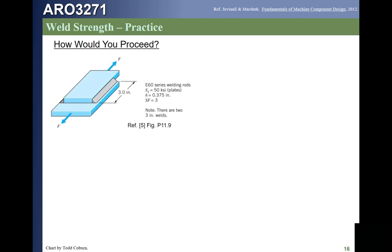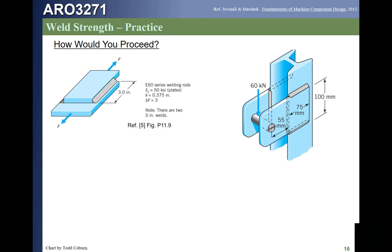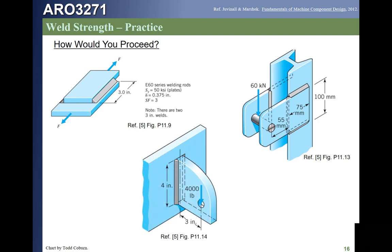Here's a problem that looks like a snakebite weld, but it's loaded even more simply — since the load goes through the center of the fastener pattern, we just divide the force by two and divide by the area to get shear stress in the weld. Another example looks like a C weld — actually two C welds on top of each other. We calculate J sub U and J for one, multiply by two to get the full J, move the loading to the centroid, and analyze. Another looks like a snakebite weld loaded out of plane, so we calculate I sub U, then I, find the moment at the centroid, and analyze for stresses.